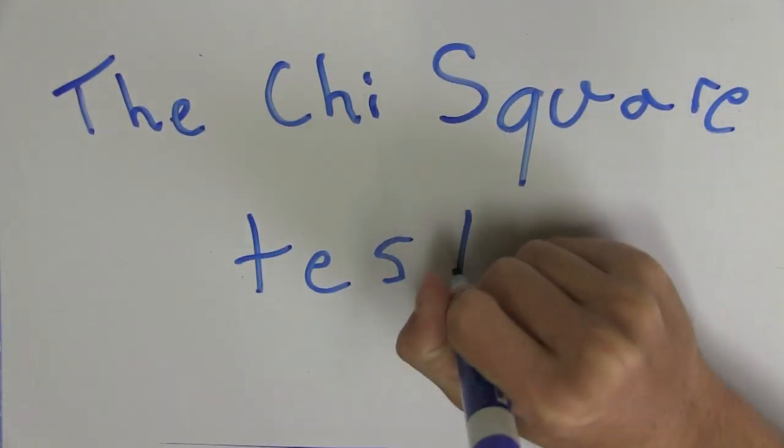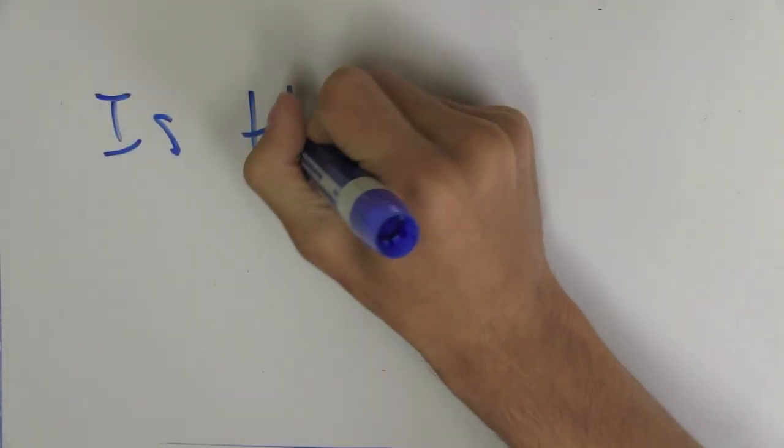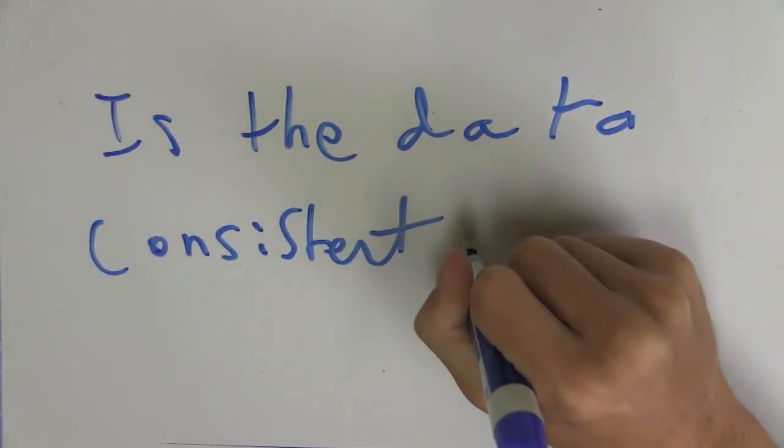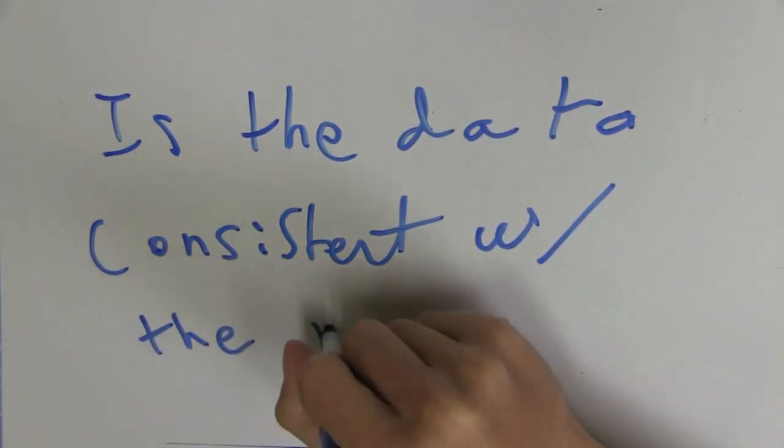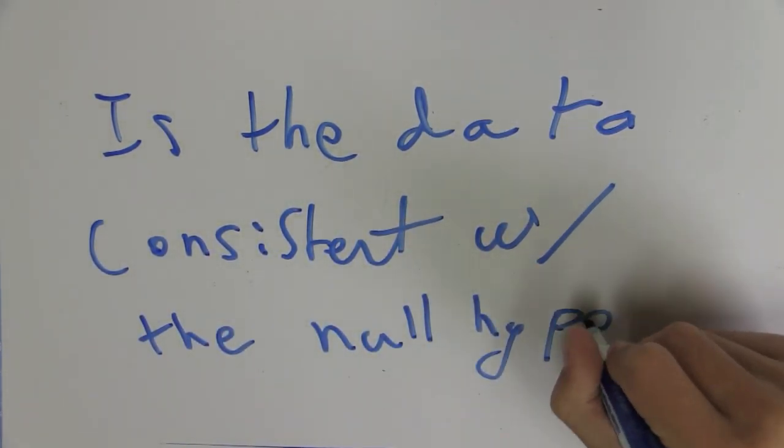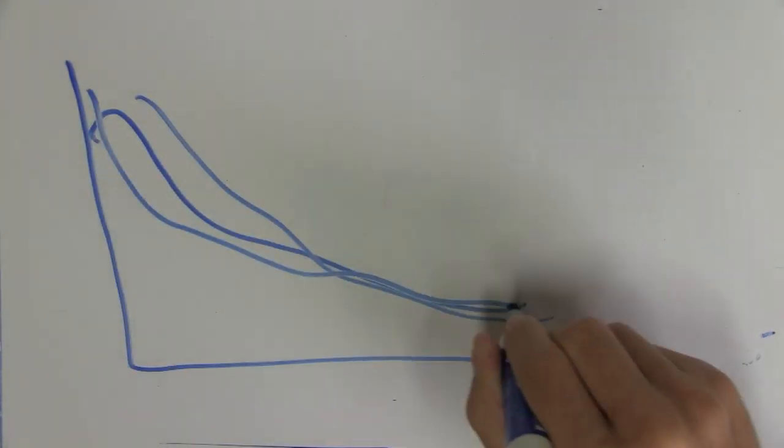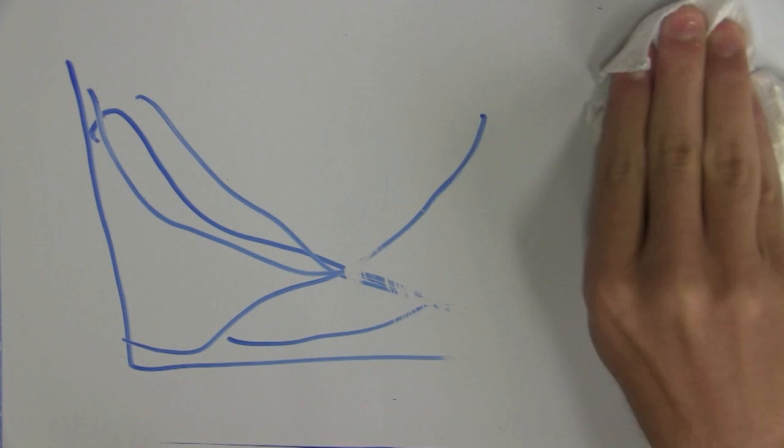The rationale behind this is that we're looking at the deviation between our expected data and our observed data to determine if our hypothesis is consistent with the data that we observe, and therefore whether or not it's subsequently going to be consistent with the chi-square distribution, which we're not going to discuss in this video.